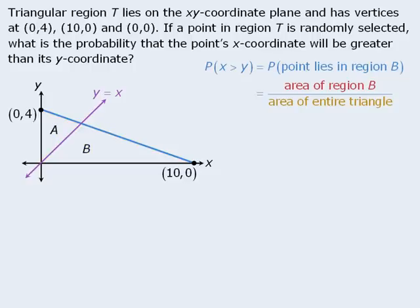Now to find the area of region B, we will need to know the length of its base and its height. The base looks relatively easy to find, but to find the height, we will need to know the coordinates of this point here. This point lies at the intersection of the purple line and the blue line, so the coordinates of this point must satisfy the equation of the purple line and the blue line. So let's find the equation of the blue line.